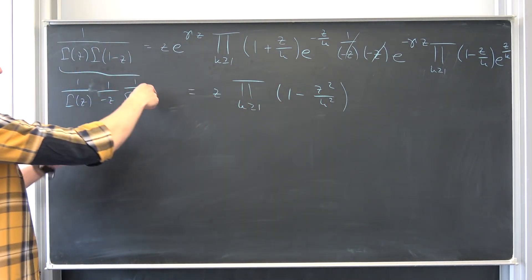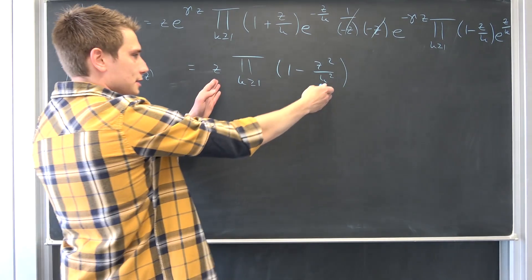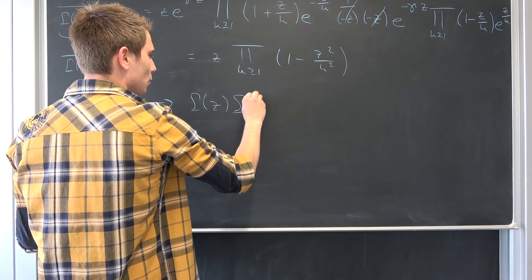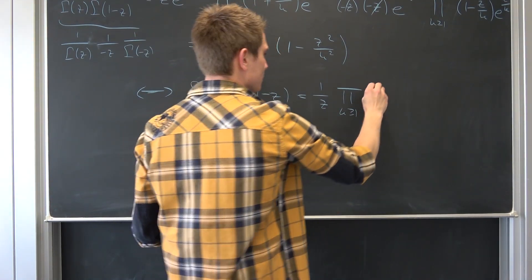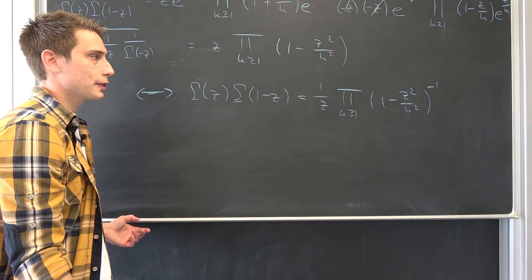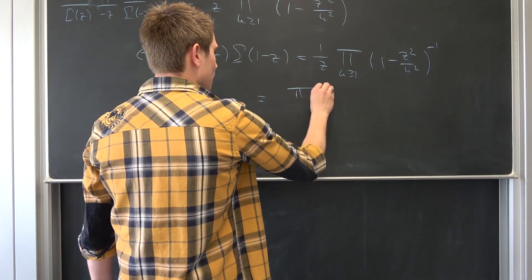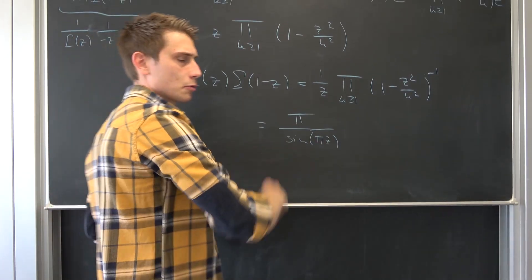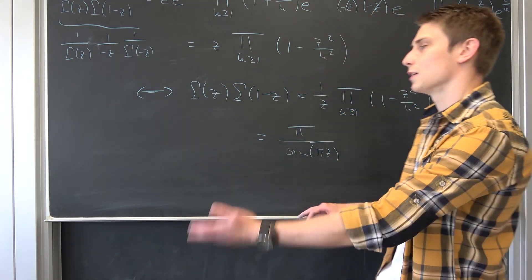Taking the reciprocal on both sides — under the condition that z ≠ 0 and the product is not zero — we get gamma(z) times gamma(1-z) = 1/z times the reciprocal of the infinite product of (1 - z²/k²), which by the same sine argumentation gives us π over sine(πz).